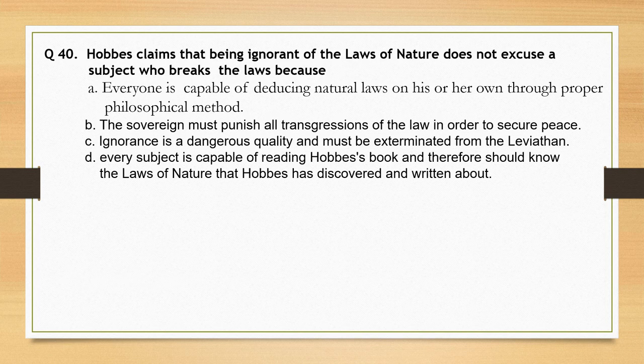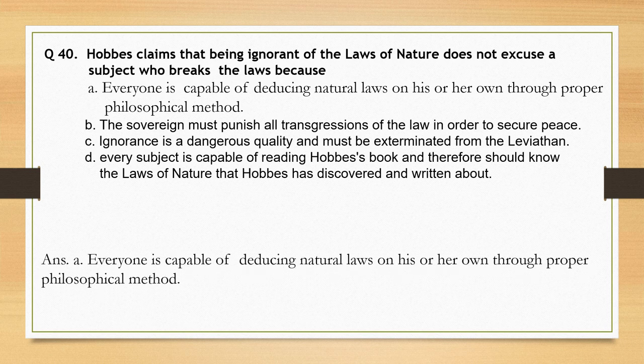Hobbes claims that being ignorant of the laws of nature does not excuse a subject who breaks the laws, because — options are given. The correct option is option A: everyone is capable of deducing natural laws on his or her own through proper philosophical method.